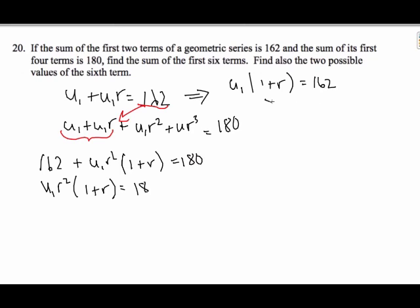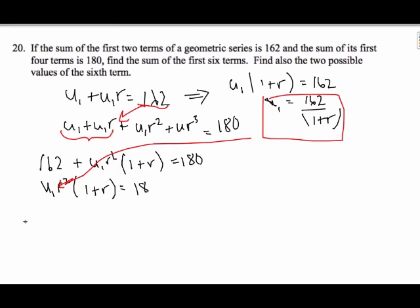And so, U1 is equal to 162 divided by 1 plus R. And I'm, again, going to take this, and I'm going to substitute this value into here. When I get that, I end up with U1 is really 162 divided by 1 plus R, times the R squared, 1 plus R, is equal to 18.